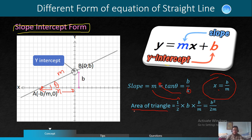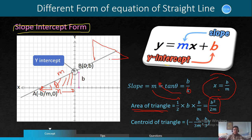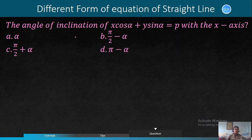In the area of the triangle, this triangle is formed in the coordinate axis. This triangle is a right angle triangle area. Half times base times height. Base is B by M, height is B. So centroid of the triangle: the centroid is at minus B by 3M and B by 3M. This is the center of the triangle. This is the equation solved by the algorithm.